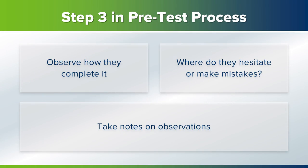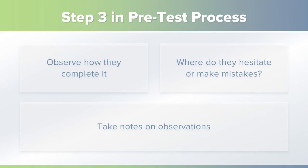Step three in the process is to observe how they complete the survey. You should also observe them completing the survey. Look for places where they hesitate and make mistakes — this is an indication that the survey questions and layout are not clear enough and need to be improved. Keep notes on what you observe.